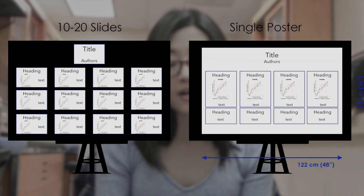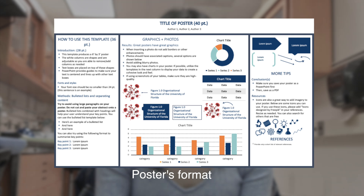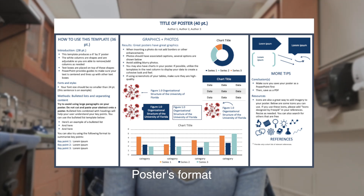We try to make our project into a poster format, condensing all of our data into six to eight figures. Usually we use the most important or most significant data, and we try to make it into an easily understandable story.